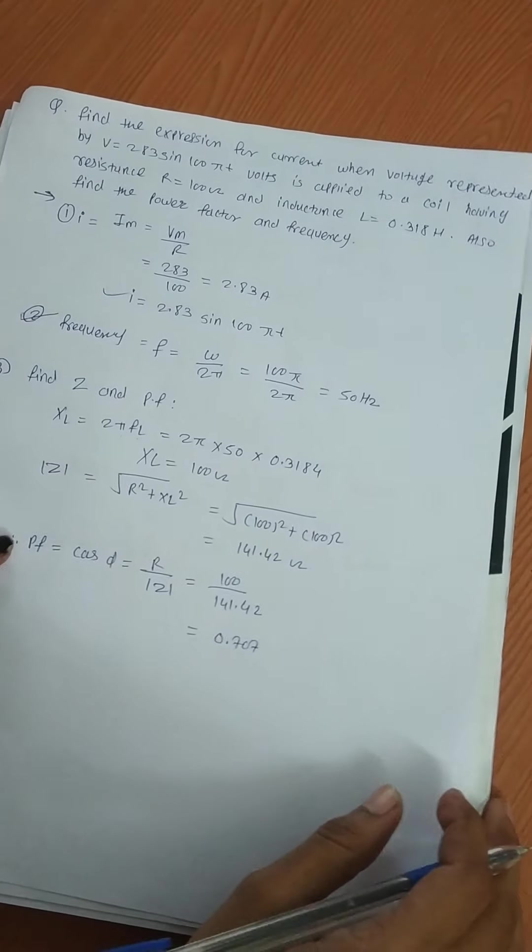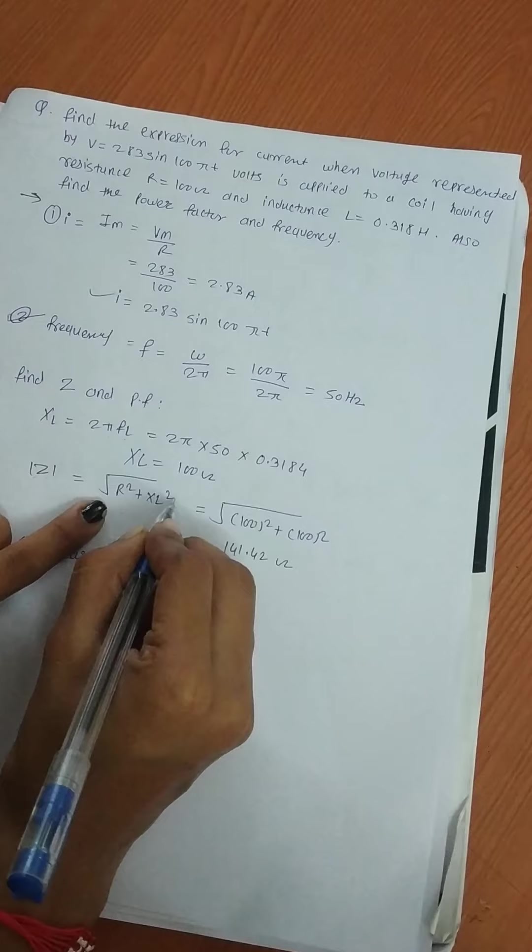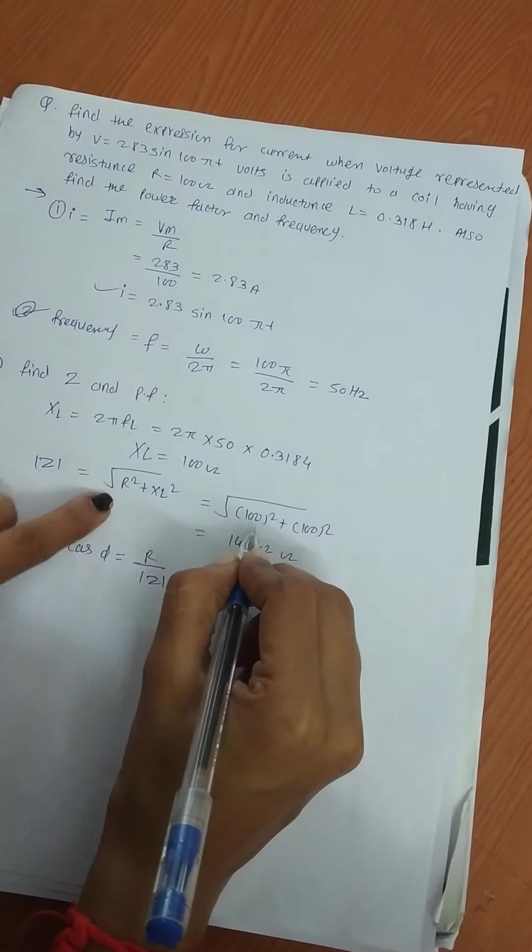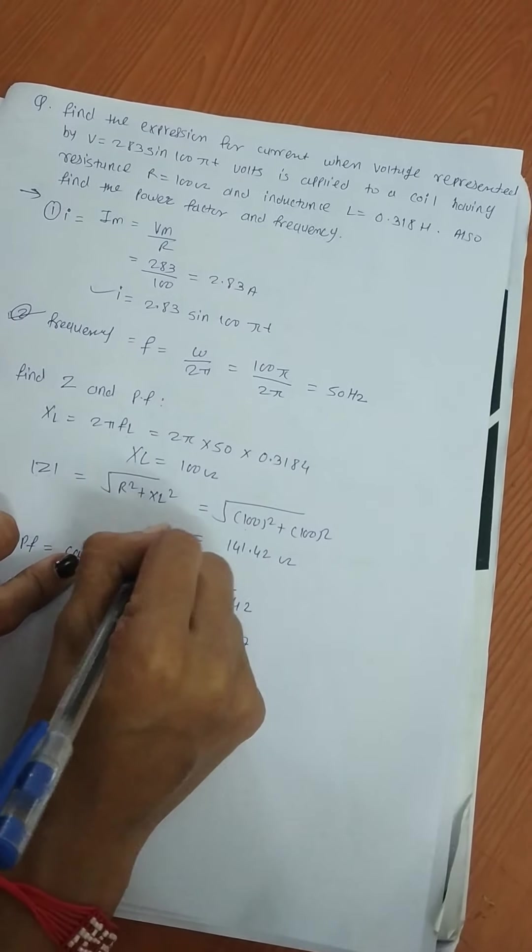XL = 100 ohm. Next, find the magnitude of impedance: |Z| = √(R² + XL²). The value of R is 100 and XL value is 100, therefore the magnitude of impedance = 141.42.